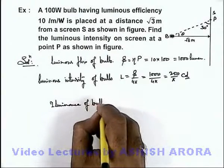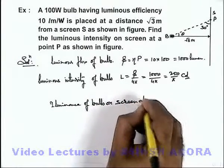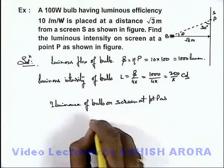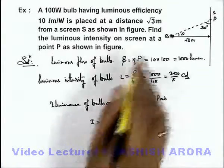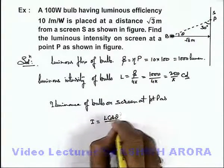Of bulb on screen at point P. This can be directly given as I, which is luminous intensity on screen, that can be written as L cos θ by r².